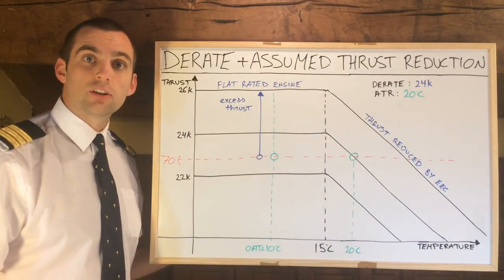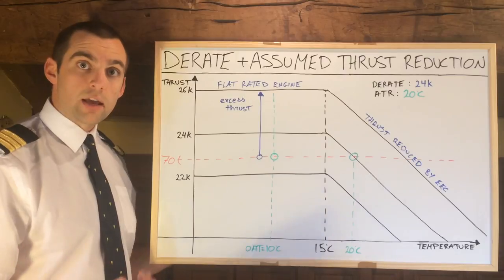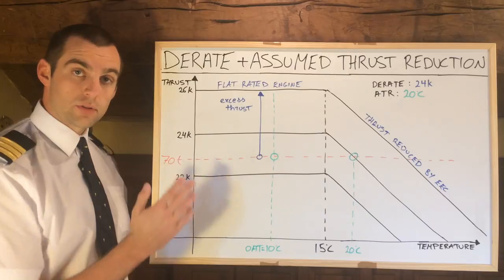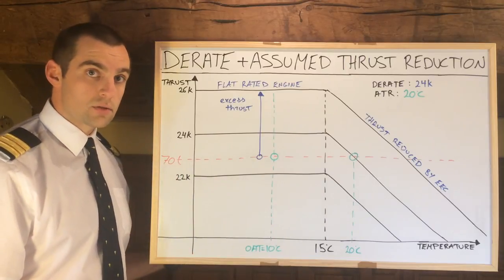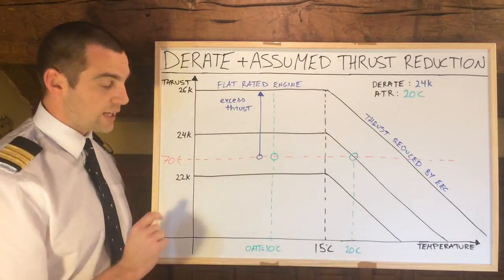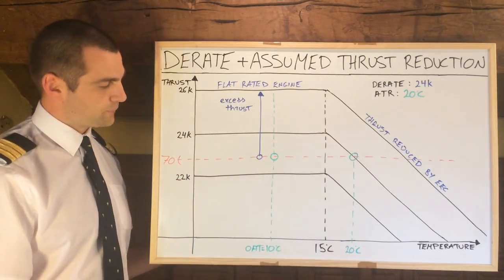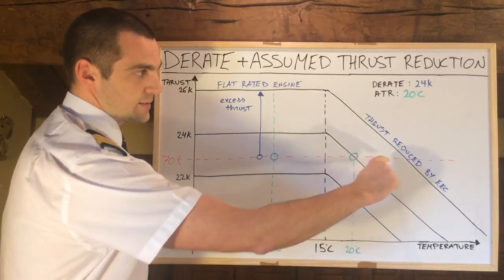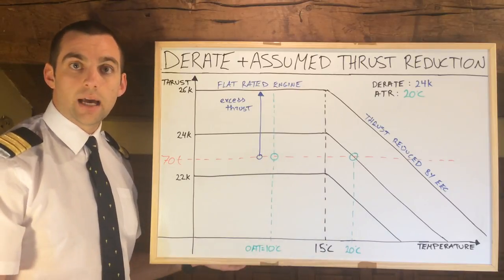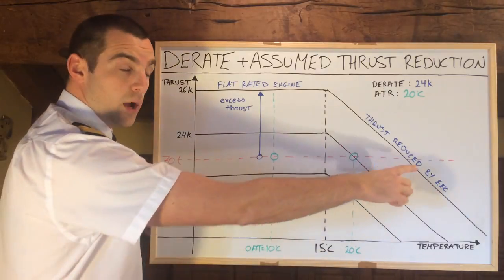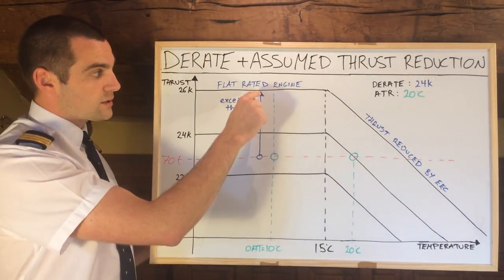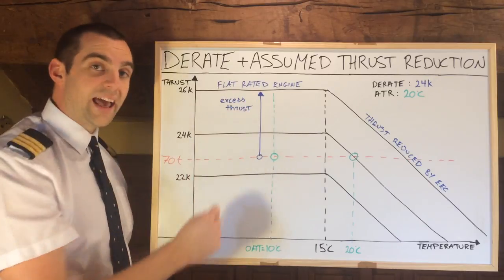Now of course we don't use full takeoff power all the time — we derate. In my example here, let's say our aircraft weighs 70 tons for takeoff. In our performance calculations we've calculated that we need X amount of thrust — let's say it's somewhere around the 23k margin as an example. So this is the thrust we require to take this aircraft off. It depends on many factors such as runway length, environmental factors, and weight. This line represents the thrust we require to get off the ground, and straight away from that line up to the max thrust is what we would call excess thrust.